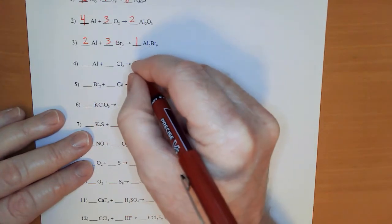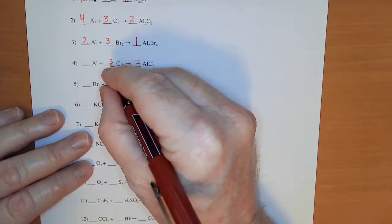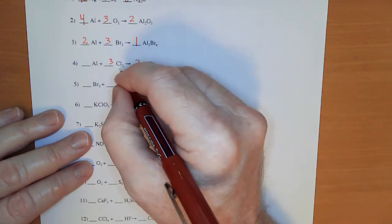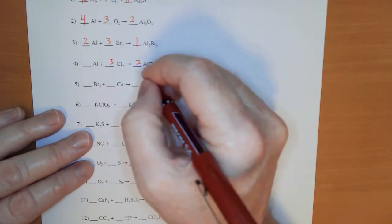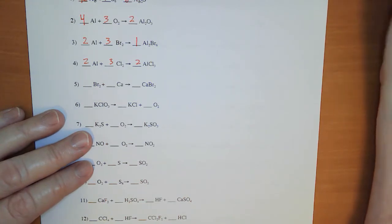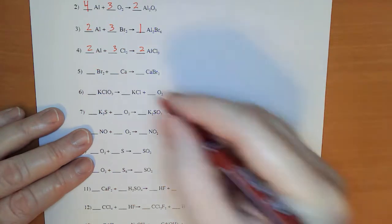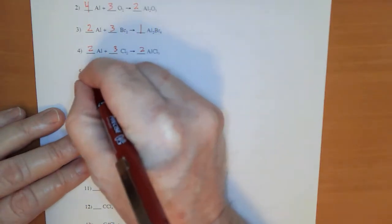AlCl₃ — I can put a 2 here. 2 times 3 is 6. I can put a 3 here. 2 times 3 is 6. And that means I need to put a 2 on this. And number 5 is already balanced.